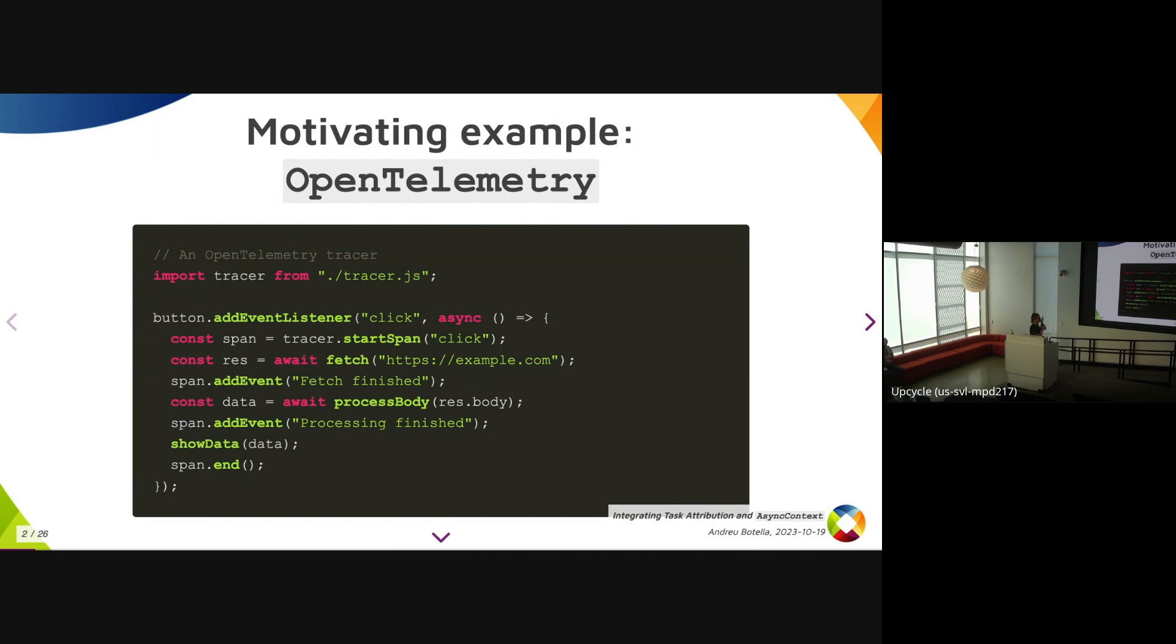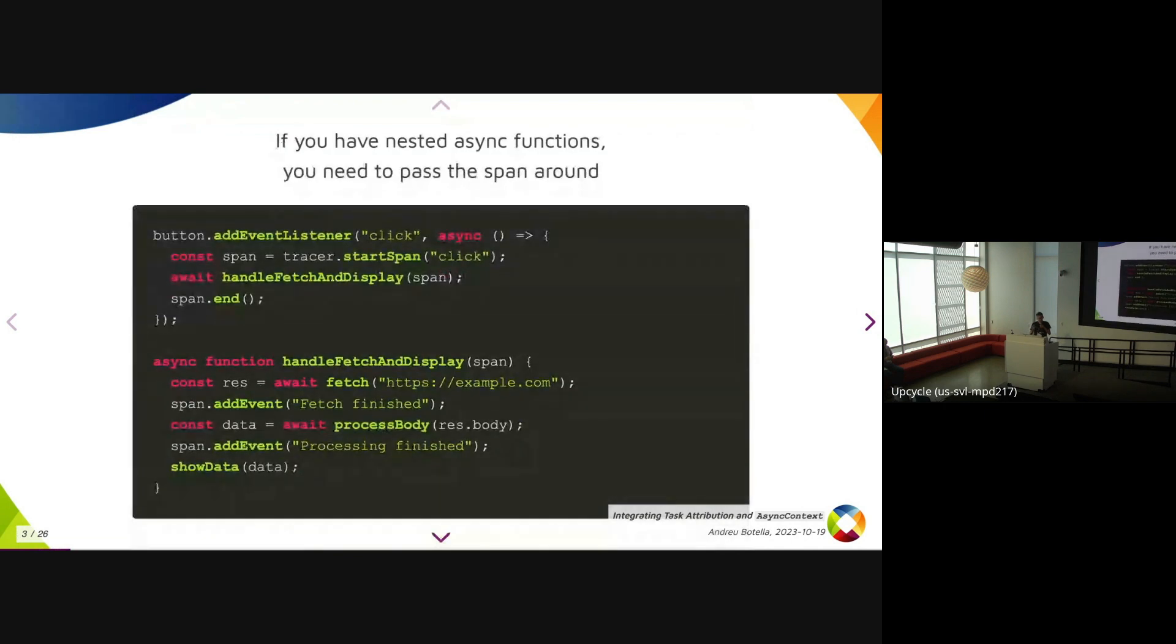And then we do some async operations. In the middle, we call addEvent on the span, which is in this sense just kind of a console log within the span, and it shows the timing at which it happened. And then after all of this, after fetching and processing stuff, we call span.end to mark as finished. The thing is, if we want to refactor this to have nested functions and extract some code out, you have to pass the span around.